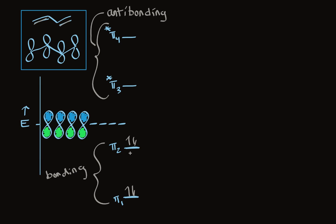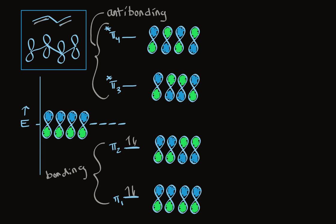The other two orbitals, pi 3 (a pi star orbital) and antibonding pi 4, don't have any electrons in them. To get a picture of what these orbitals actually look like with respect to the molecule, we can draw that out. There are four ways to arrange these adjacent p orbitals. For the bottom one, all four orbitals are in phase. For the next higher one in energy, only two adjacent orbitals are not in phase. For the next one up, there are two pairs of adjacent orbitals that are not in phase. And in the fourth arrangement, none of the adjacent p orbitals are in phase.